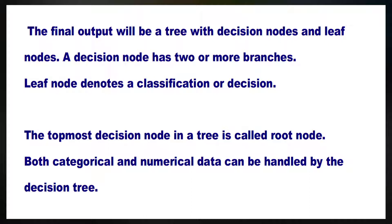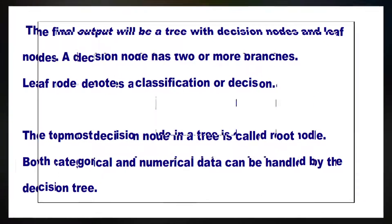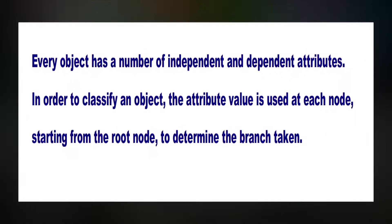Both categorical and numerical data can be handled by the decision tree. Every object has a number of independent and dependent attributes. In order to classify an object, the attribute value is used at each node starting from the root node to determine the branch taken. The path found by testing at each node leads to a leaf node, which is the class the object belongs to.